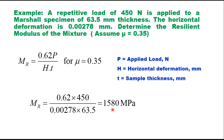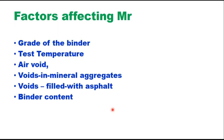That is how test data are used to calculate the resilient modulus of asphalt mixture. The MR value depends on several factors including grade of the binder, test temperature, air voids, voids in mineral aggregate, voids filled with bitumen, and binder content. All parameters of mix design influence the value of MR.